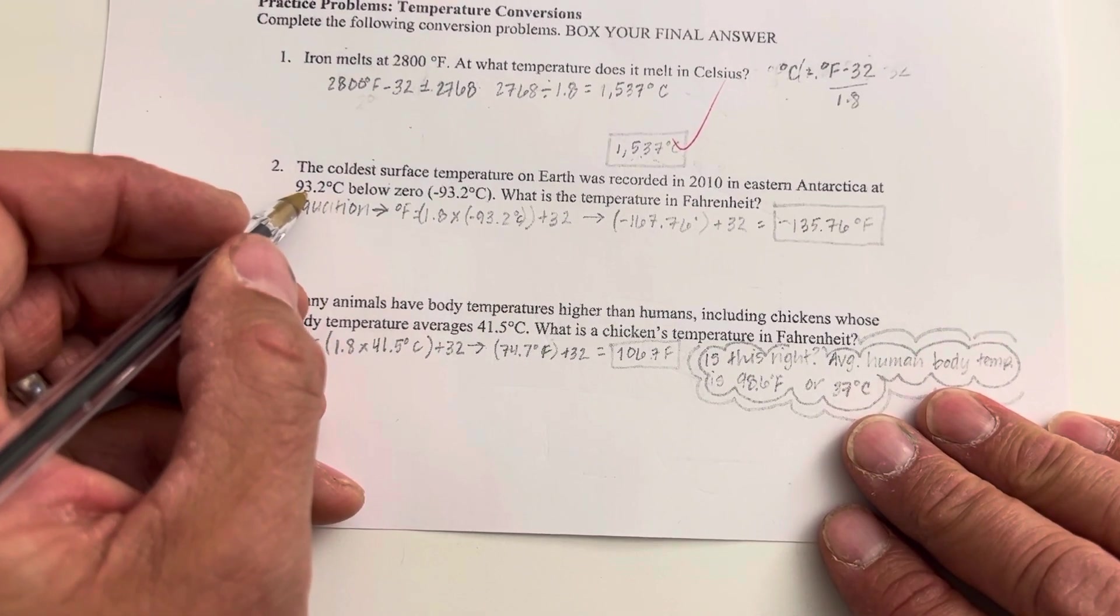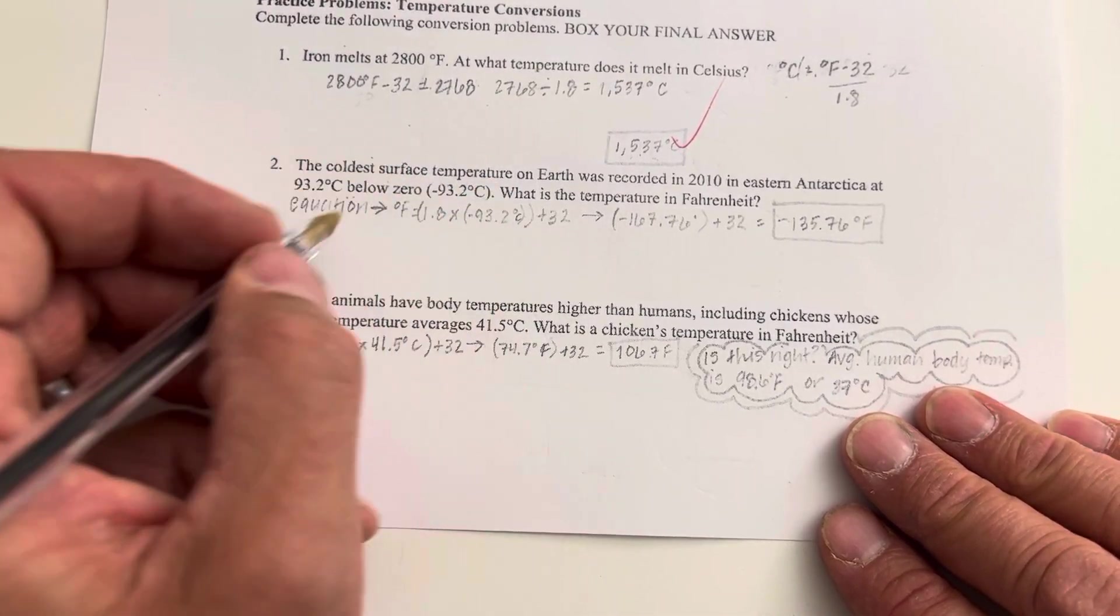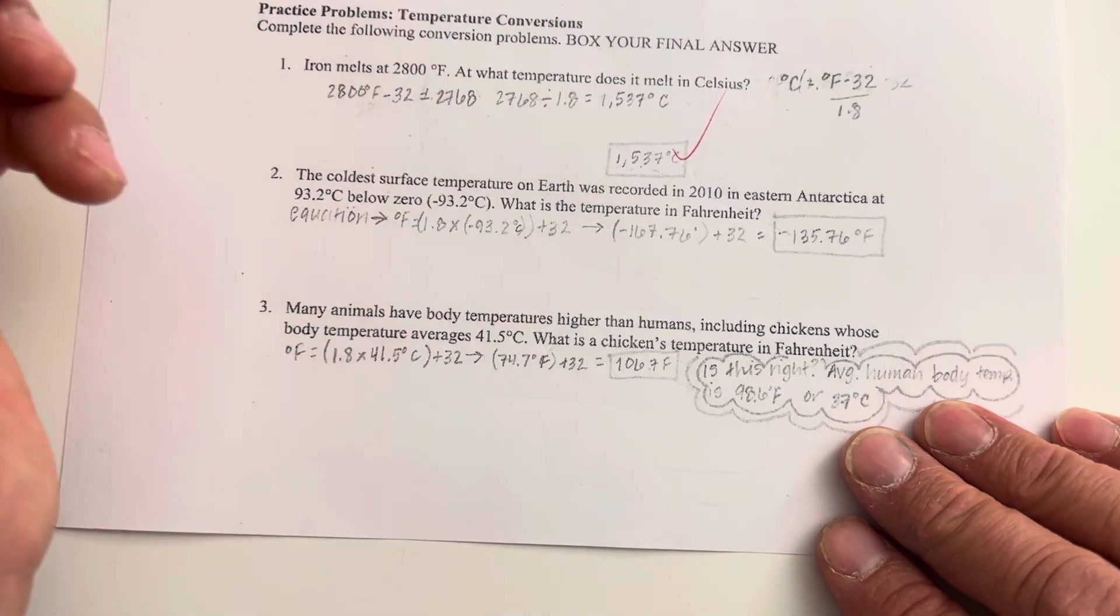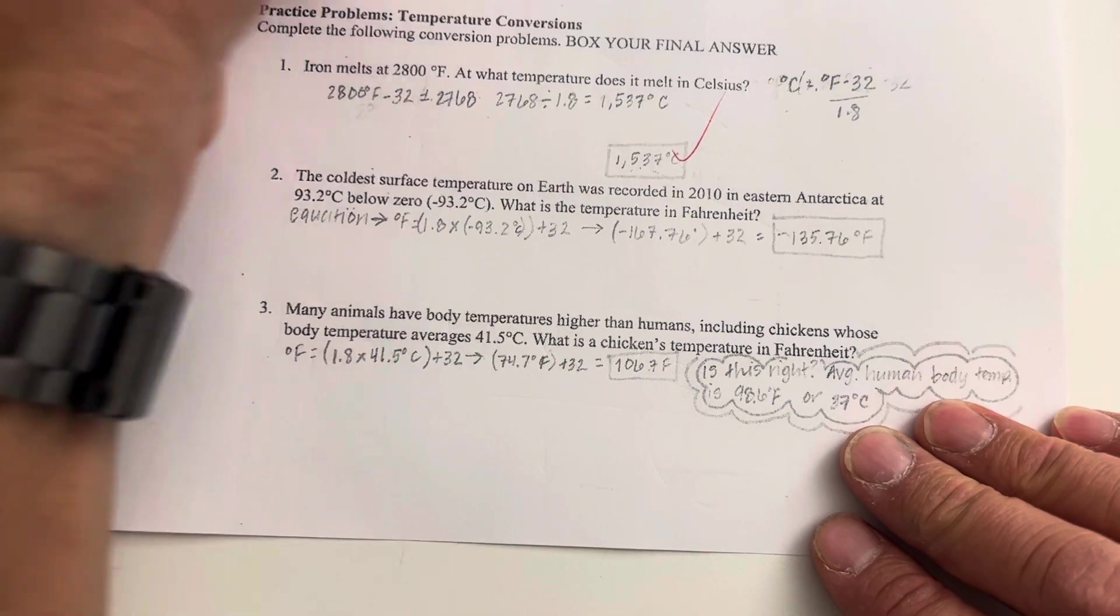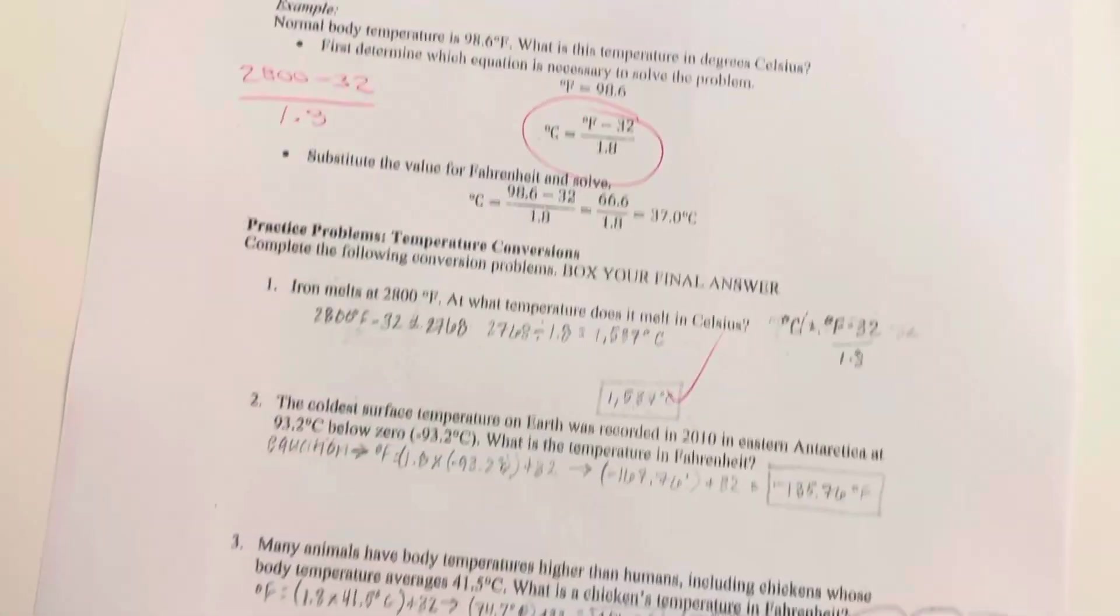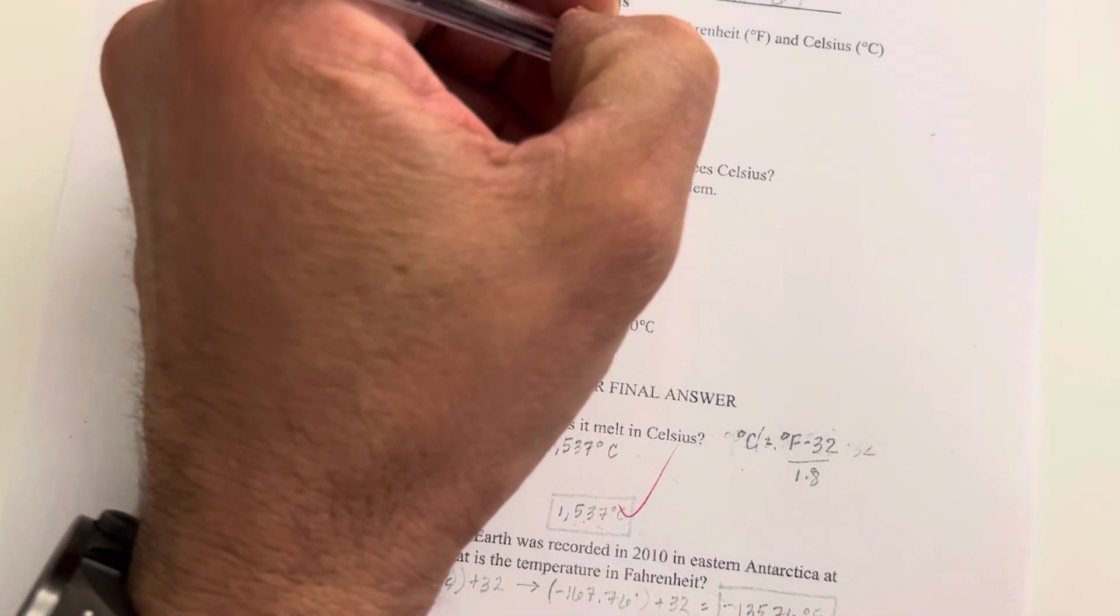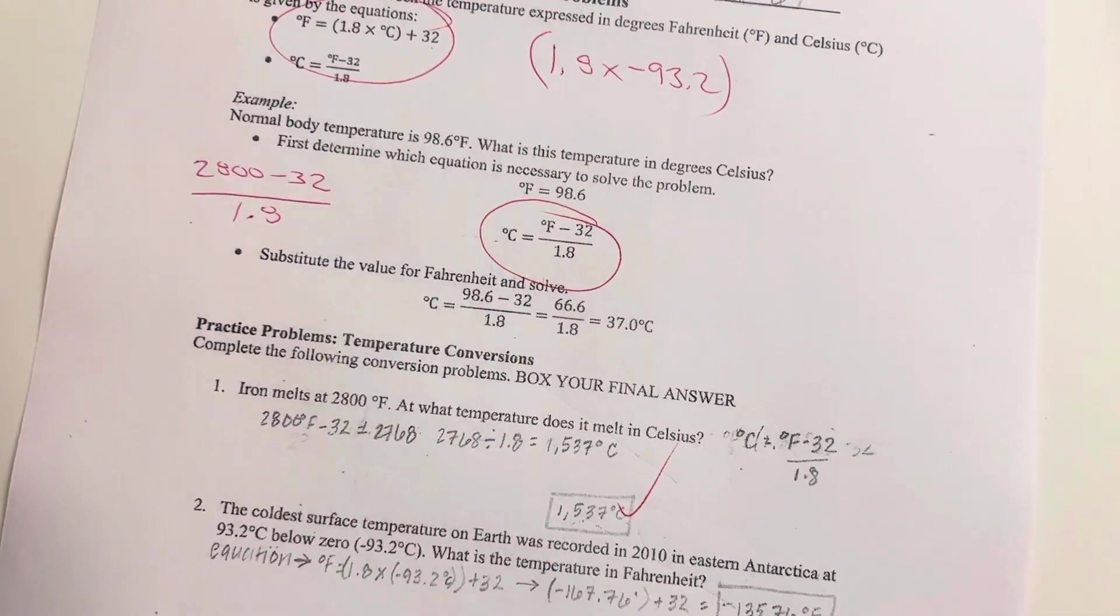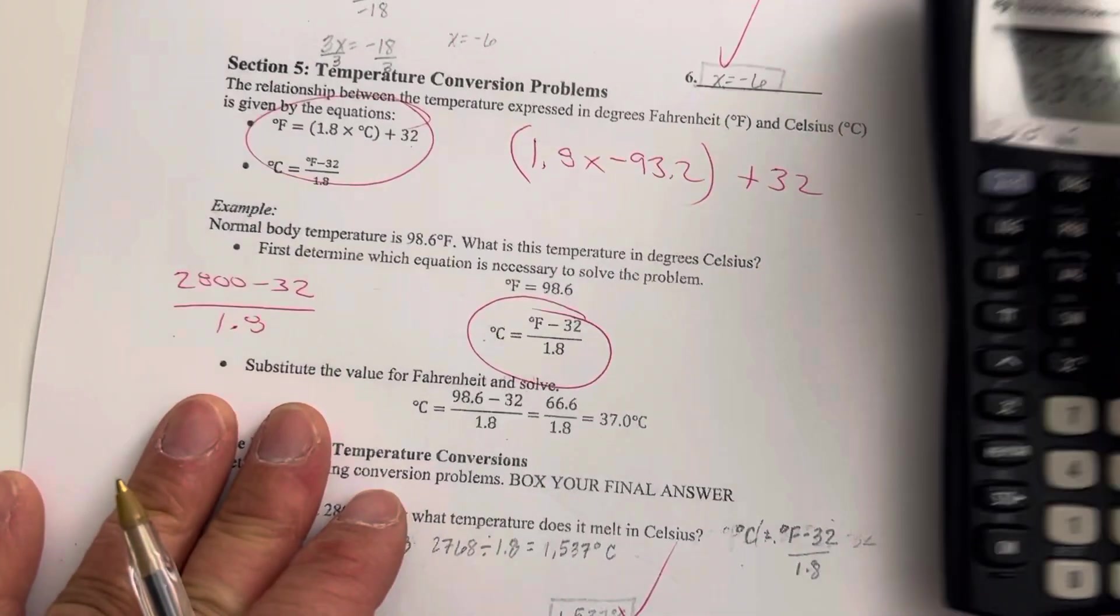For the next one, if we have 93.2 degrees Celsius, so below Celsius, so negative 93.2. What's the temperature in Fahrenheit? We're going to use a rearranged form of this. So we're going to use this formula here. We're going to plug in 1.8 times negative 93.2, put all that in brackets, and then add 32 to that.